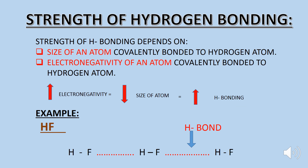Now let's discuss the strength of hydrogen bonding. It depends on two factors: the size of the atom covalently bonded to the hydrogen atom, and the electronegativity of that atom. When electronegativity increases, the size of the atom decreases and the strength of hydrogen bonding increases. Taking hydrogen fluoride as an example, we can easily understand the strength of hydrogen bonding.